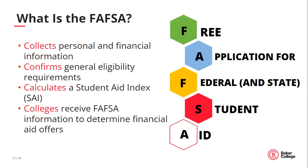If you end up not attending that college, make sure to change your college choice for the state of Michigan via their MySSG portal. Demographic information such as legal name, social security number, address, and date of birth will be requested for both the student and parents, if applicable. In addition to demographic information, 2022 tax information will be used to complete the 2024-2025 FAFSA.